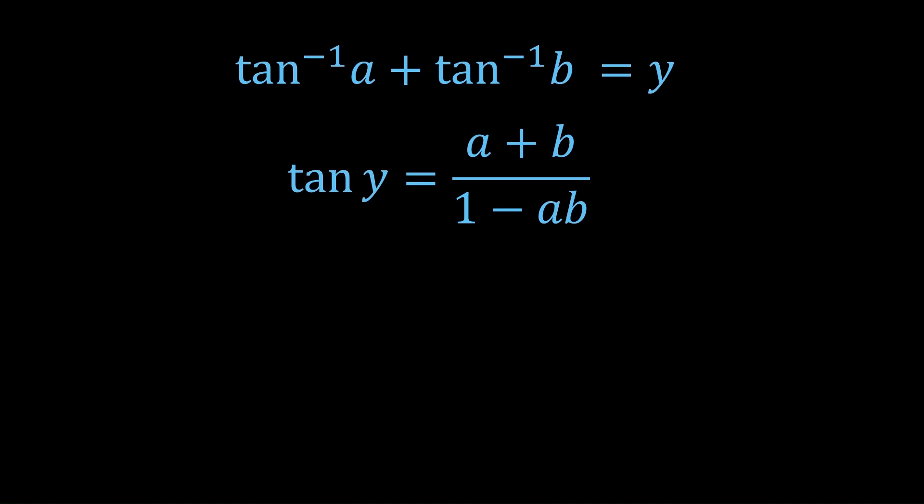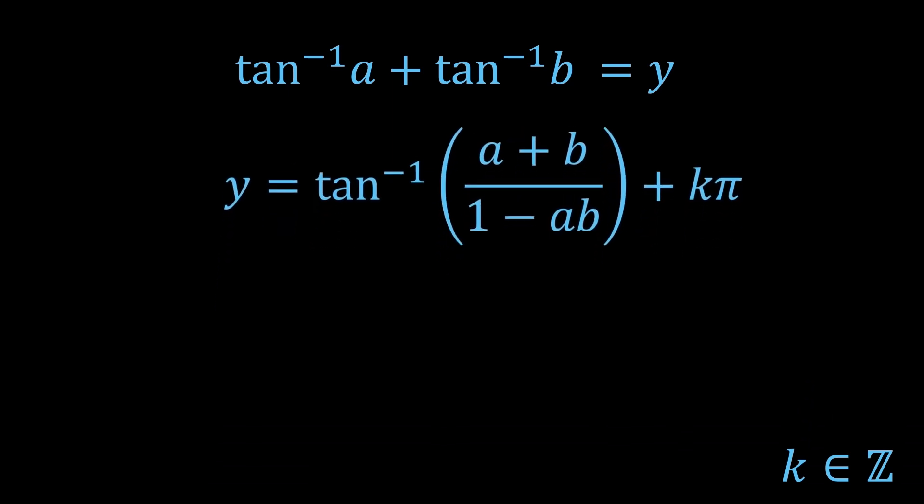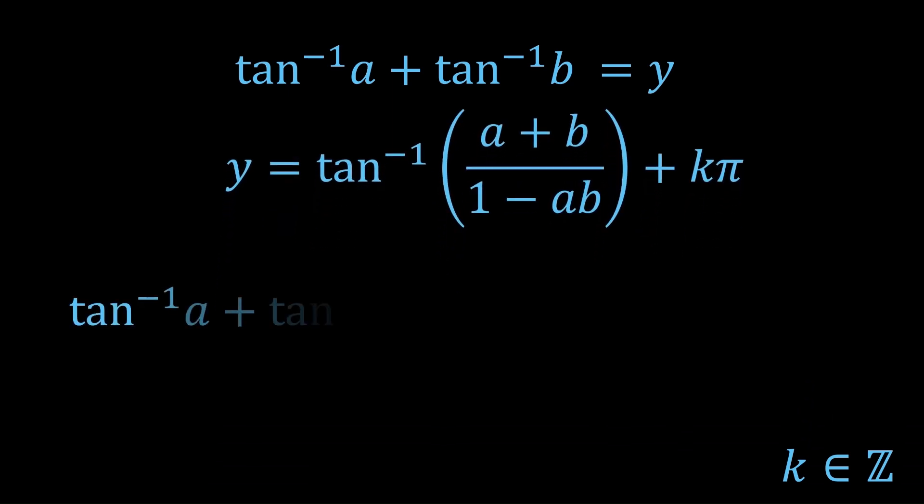If you have tan of y is equal to something, then y is equal to the inverse tan of that something plus k π, where k is some integer. And now replacing y with what we had before, we get this formula.